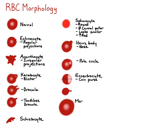A macrocyte is a large red blood cell, and a microcyte is a small red blood cell. Polychromasia, or polychromatophilia, is a red blood cell that has a blue cast to it — that's a younger red blood cell.